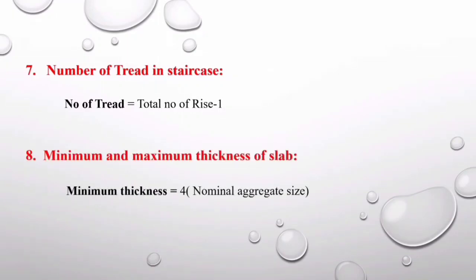Formula eight is for finding the minimum and maximum thickness of a slab. The formula is: minimum slab thickness = 4 × nominal aggregate size. For example, if the aggregate size is 20 mm, then 4 × 20 = 80 mm, which is approximately 8 centimeters. So you should provide at least 8 cm slab thickness.